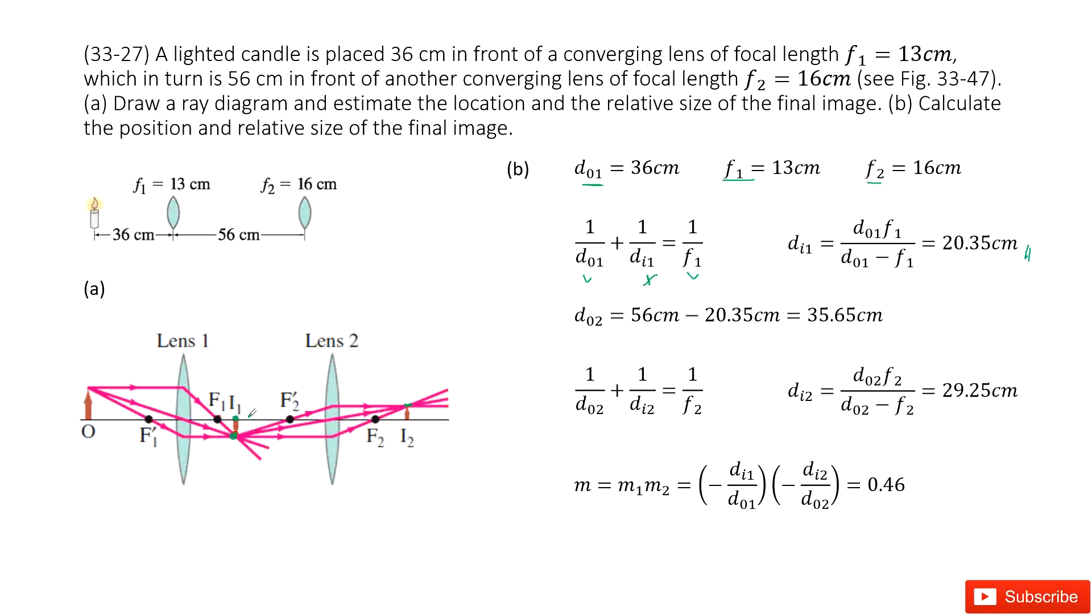Now, can you decide the object distance for lens 2? You can see the distance between lens 1 and lens 2 is given, 56 cm. And you know this part is DI1. Can you find DO2? Yes. DO2 is this part. So you can find DO2 equal to 56 cm minus 20.35 cm, which is DI1. Then you get DO2.